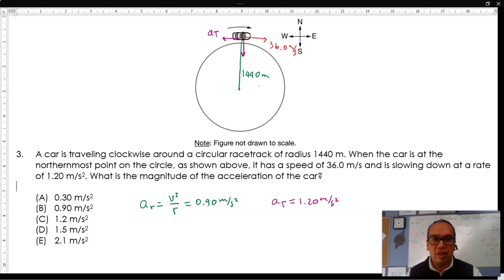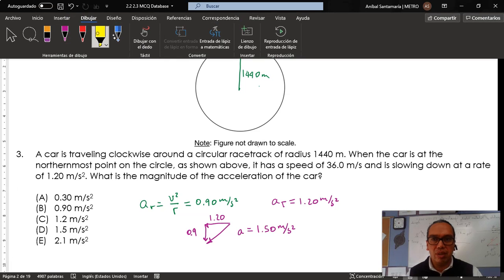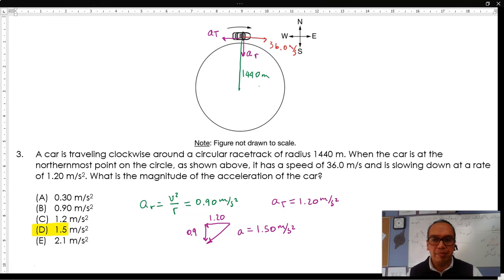You have a tangential acceleration like that, a radial acceleration like that, and the vector addition of these two has a component of 1.20 in the tangential direction, 0.9 in the radial direction. According to the Pythagorean theorem, the total acceleration is going to be equal to 1.50 meters per second squared, and that is option D.